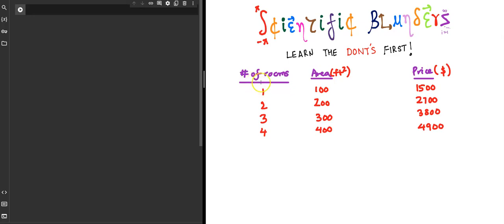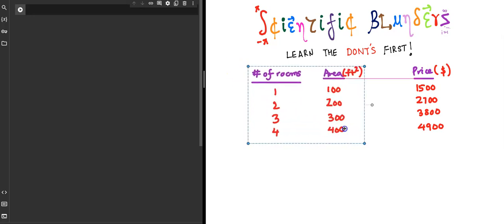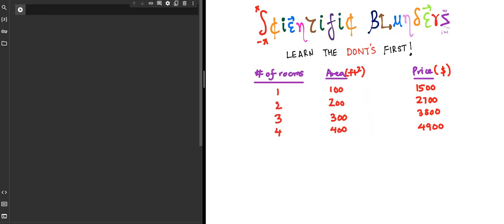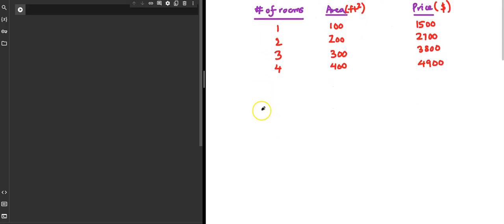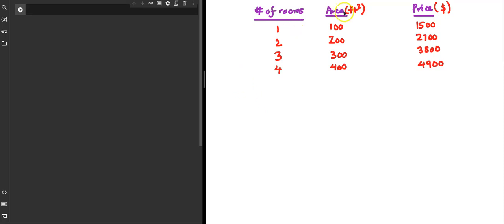The first thing we notice is that as the number of rooms and area increase, the price also increases somewhat in a linear fashion. That gives us an idea that maybe a linear regression model is one possible model to fit the data. To represent this in more compact notation, we call the input matrix A and the target vector b.